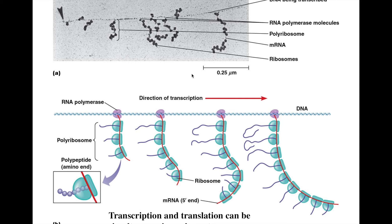Here's an example: in a prokaryote, DNA acts as the template, transcripts come off at a right angle, and the little dots on the transcripts are ribosomes. So as a transcript is being made, multiple ribosomes are already on it translating it. The oldest transcript is the longest; younger transcripts are shorter. But even transcripts that have just started get ribosomes attached to them right away.